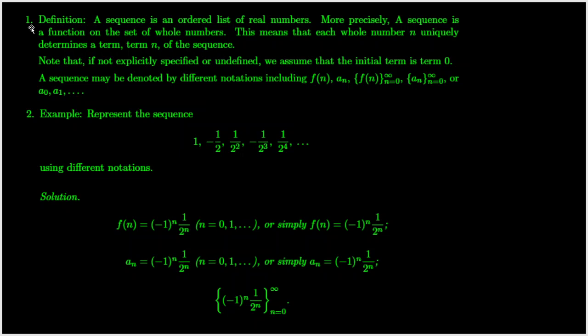A sequence is an ordered list of numbers. More precisely, a sequence is a function on the set of whole numbers. This means that each whole number n uniquely determines a term, term n, of the sequence. Note that we have a convention that the initial term of a sequence is term 0 unless otherwise specified or undefined.